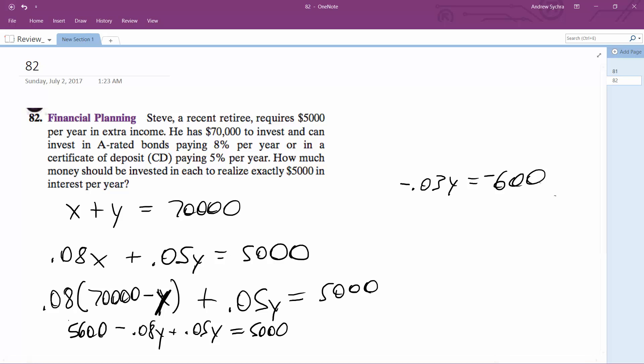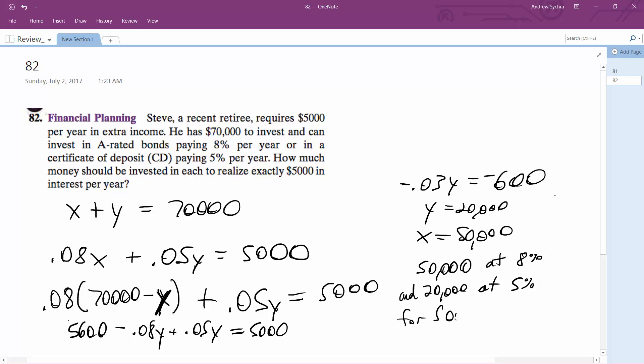Y equals $20,000, so that means X equals $50,000. So that means $50,000 at 8% and $20,000 at 5% for $5,000 in interest. That's it.